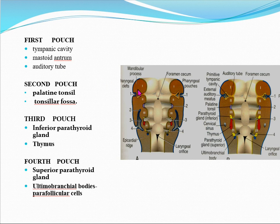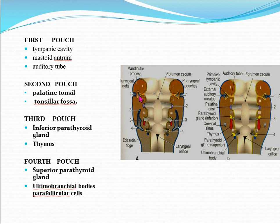The derivative of the first pharyngeal pouch is called the tubo-tympanic recess, because it gives rise to the tympanic cavity, mastoid antrum, and the Eustachian tube.